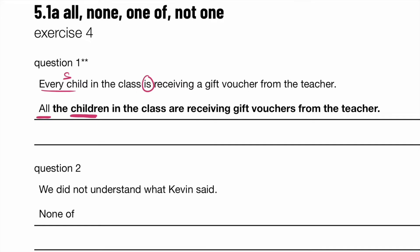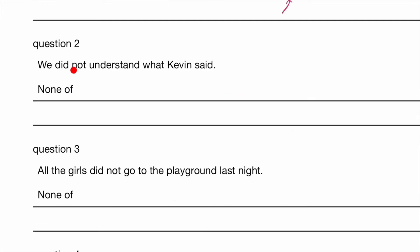Another thing about this question: every child is receiving a gift voucher — a single one each. But when dealing with everybody in the class, they are receiving gift vouchers, plural. That's another part that might cause students to trip up. We did not understand what Kevin said — notice we're using the past tense: we did not understand. So: none of us understood what Kevin said. Using the past tense: none of us understood what Kevin said.